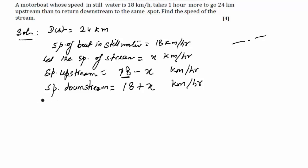According to the question, it is given that time upstream equals time downstream plus 1. Time is distance upon speed. The distance is 24 upon speed upstream equals distance upon speed downstream plus 1.